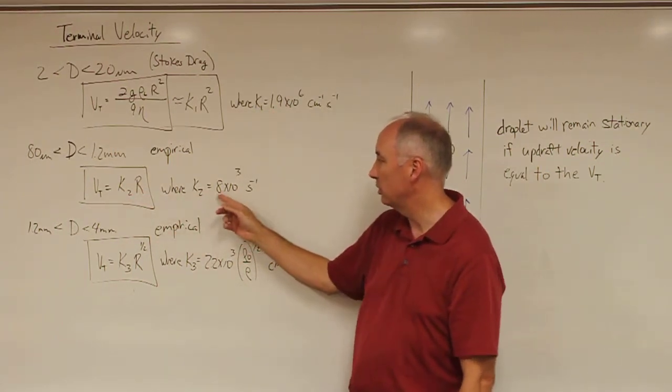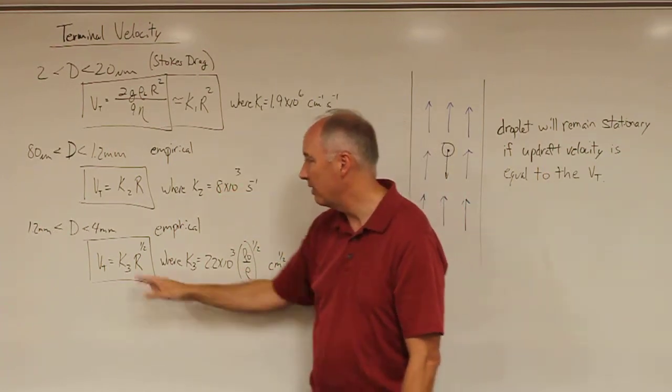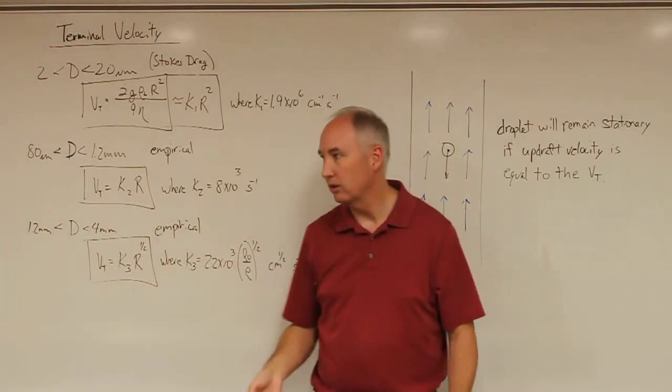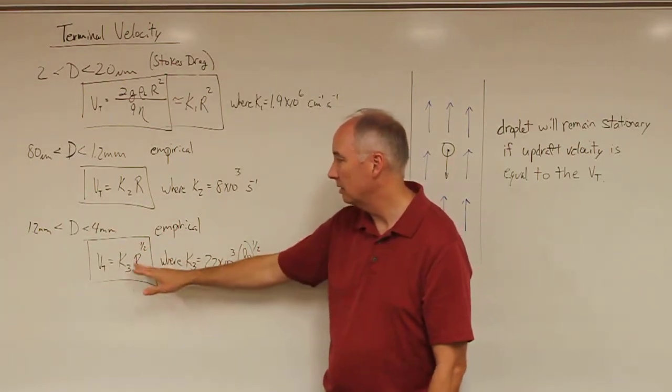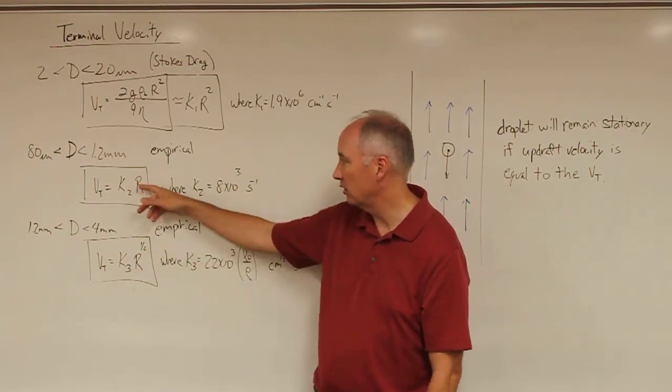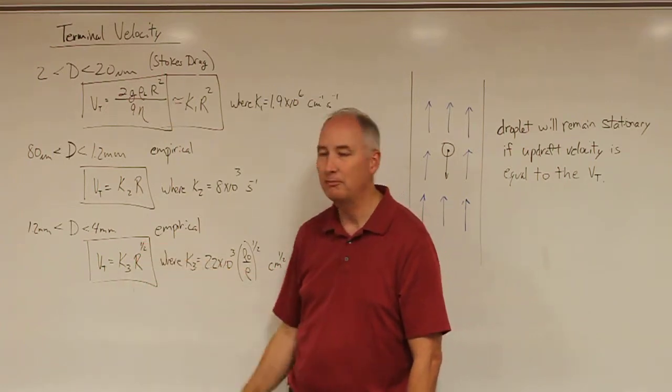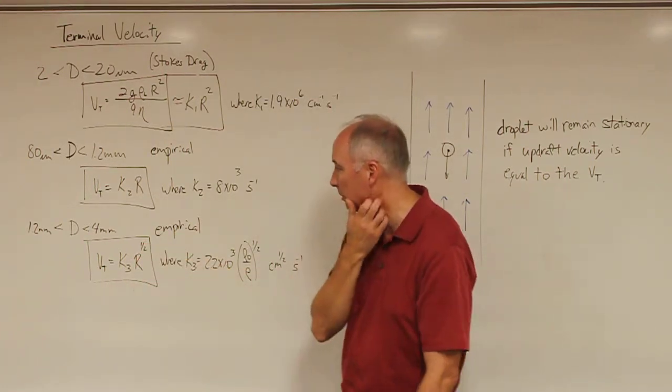As the droplets get even bigger, the terminal velocity no longer is a function of the droplet radius. It's now a function of the droplet radius to the one half power, or the square root of the droplet radius.